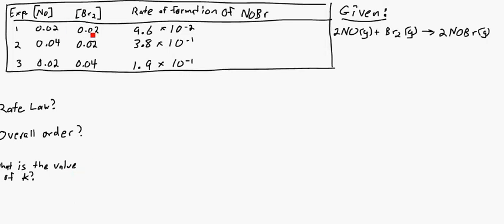So again, just do a little analyzing. So 0.02 for NO, 0.02 for Br2, and then that's in the first experiment, which gives you 9.6 times 10 to the negative 2, so that's just 0.096. In the second experiment, you had a doubling of NO. Br always remained the same.